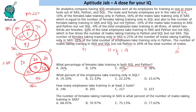The second question asks what percent of all employees take training only in SQL. Only SQL for males is 47 and for females is 40, giving 87 out of 450. Since 20 percent of 450 is 90, and 87 is less than that, the answer is approximately 19.33 percent.